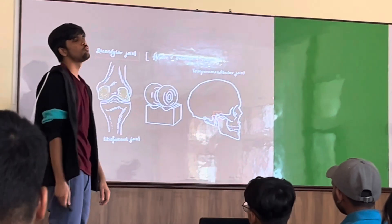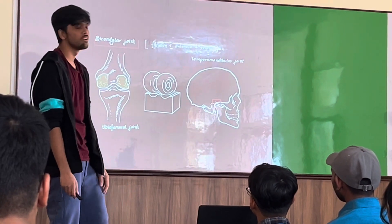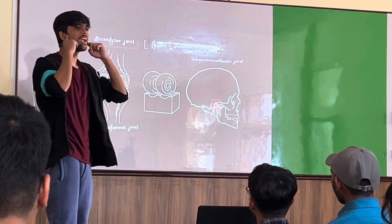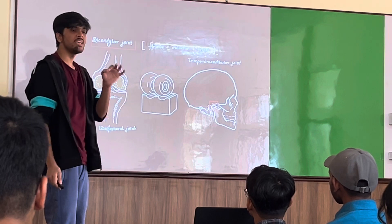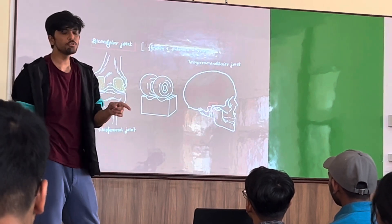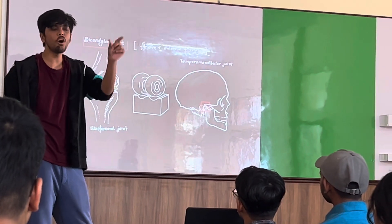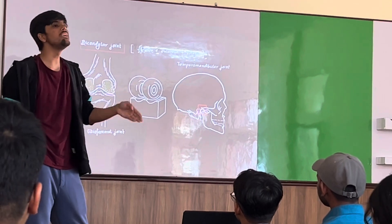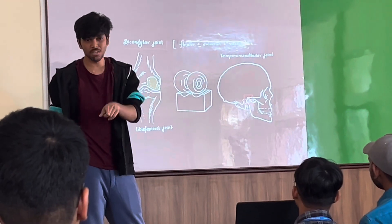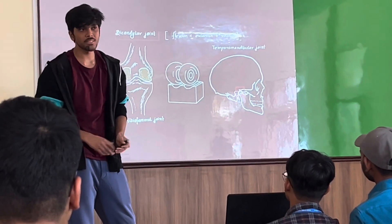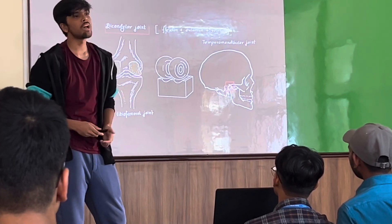What about your knee joint? It produces flexion and extension. The thing about these joints is that they also allow a certain degree of rotation, so they are modified hinge joints. And since the articulating surfaces are present in the form of knuckles, they are called condylar joints.